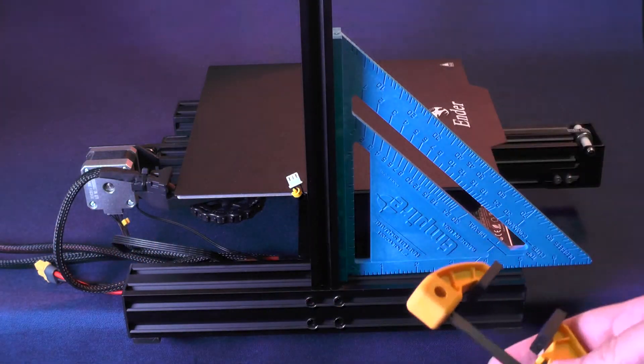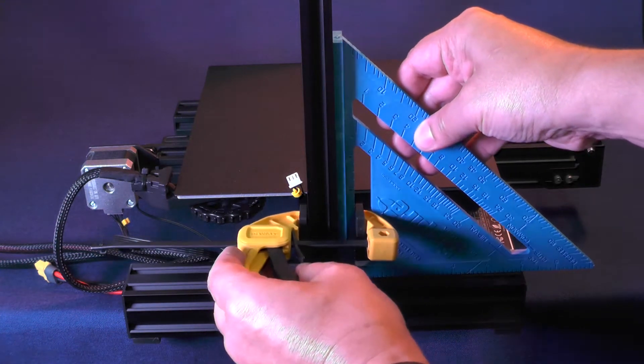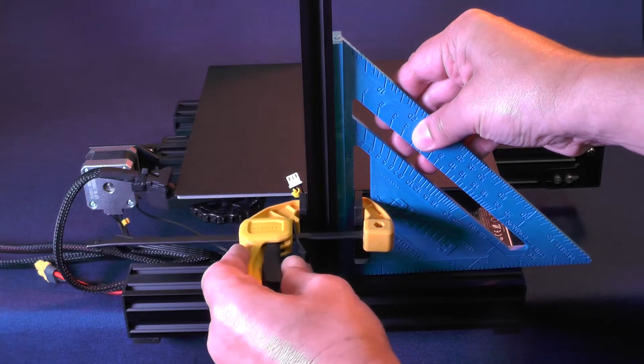Here, you will use the plastic square and one of the little clamps to make sure that the 2040 aluminum extrusion is always at a 90 degree angle.